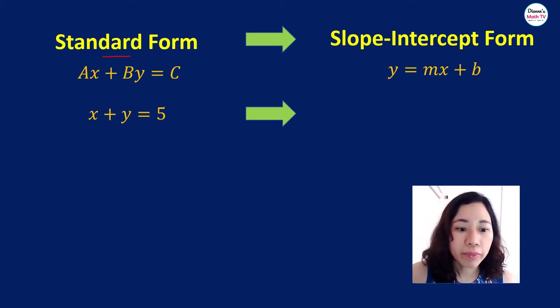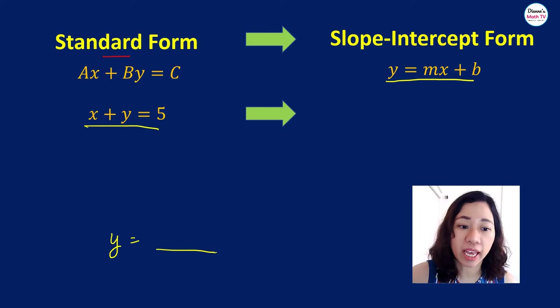So let us look at this example, x plus y equals 5. What we want to do is to achieve y equals something here, so that we would have our slope-intercept form. Basically, we just want our y on one side of the equation. If you will look at this, you have an x here. We do not want to have our x here because we just want our y to be on this side. So what will we do? We'll remove the x here. How?